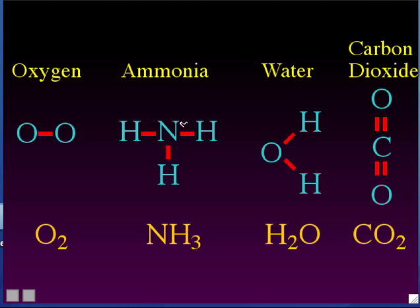If there's only one of an atom, like there's only one nitrogen in ammonia, you don't write 1 — it's understood that if there's no number after an atom, there's just one of it. Water molecules have two hydrogens and one oxygen, so you put a little subscript 2 after the H, but no 1 after the O. Carbon dioxide is made out of one carbon and two oxygens, so its molecular formula is CO₂, with the 2 telling you there are two oxygen atoms.